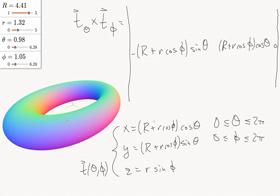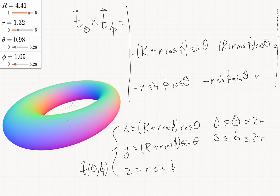Differentiating with respect to phi gives: negative r sine phi cos theta, negative r sine phi sin theta, and r cos phi. So those are the two tangent direction vectors, and we set up the i, j, k determinant to compute the cross product.